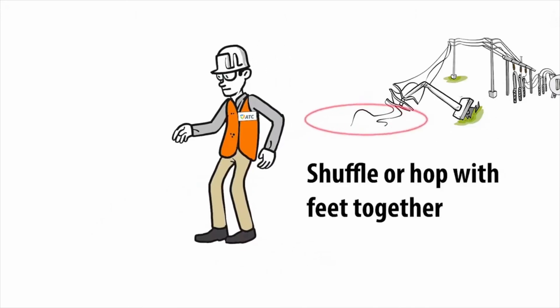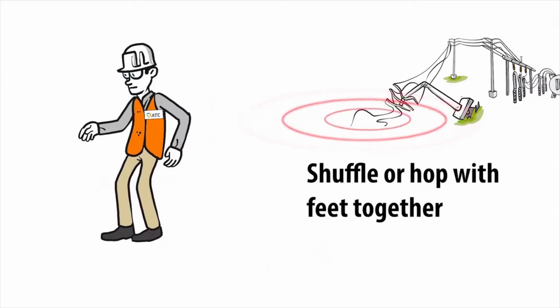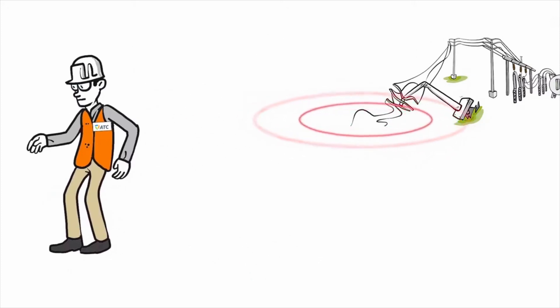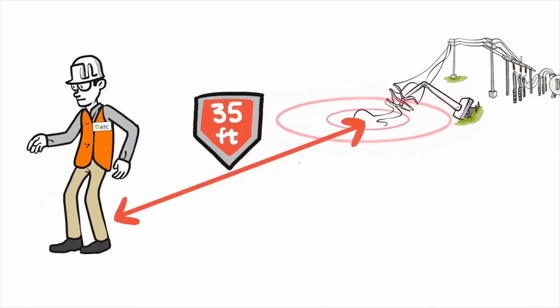So, shuffle your feet or hop with both feet at the same time to avoid electrocution. The very best practice is to stay at least 35 feet from any downed power source.